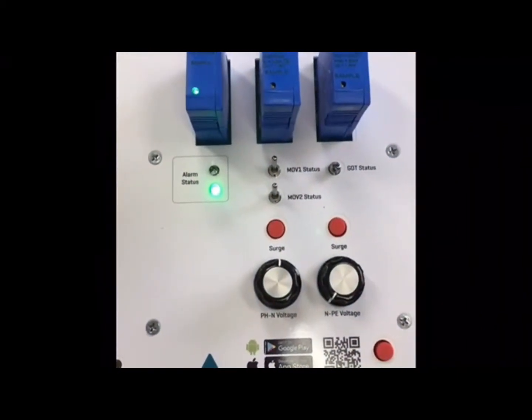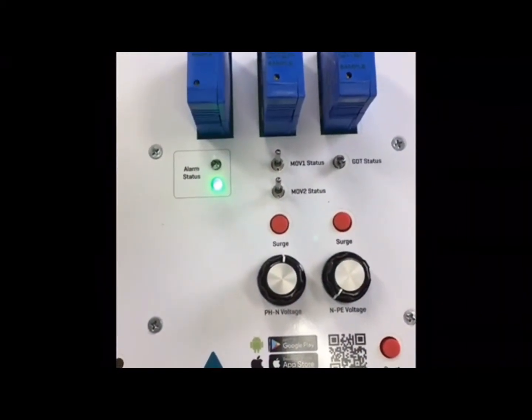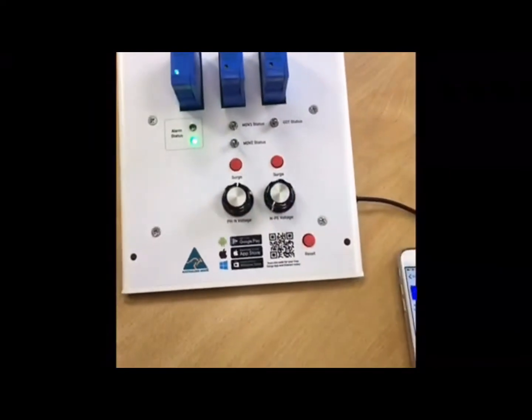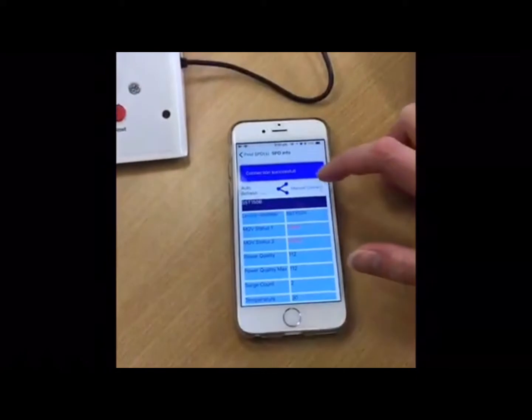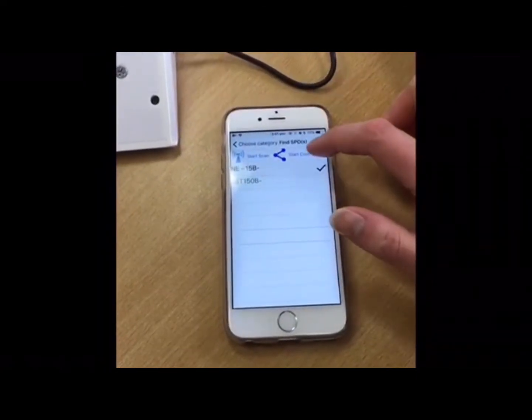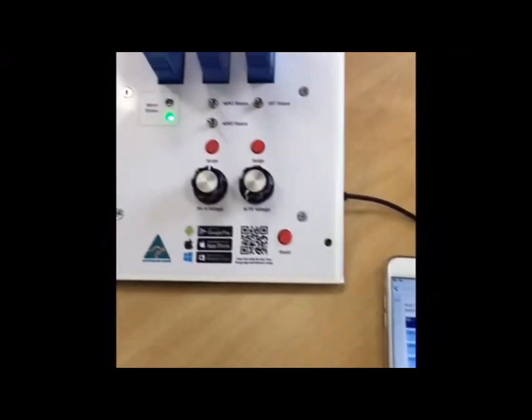We are now going back to the search screen of the app to find our NE15B by hitting the manual connect. Again, we will simulate a transient pulse by pressing the search button on the demo panel, and change live voltage by rotating the voltage dial.